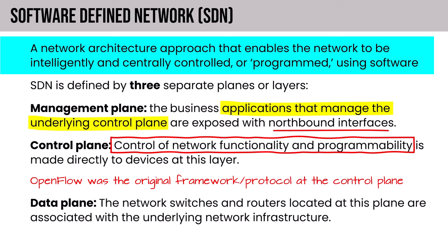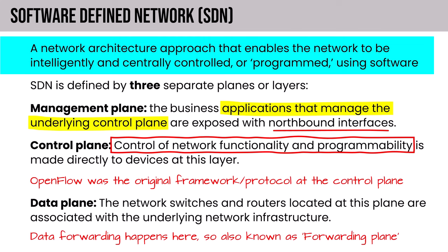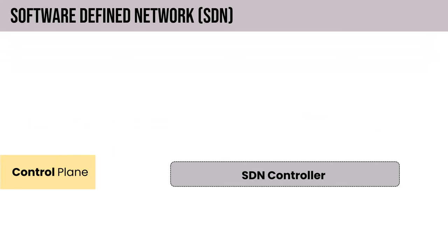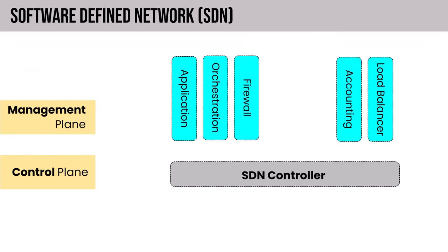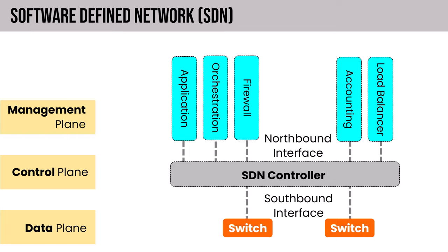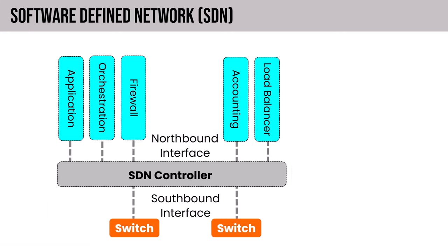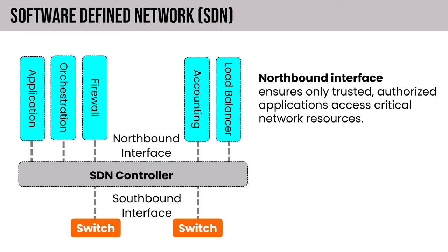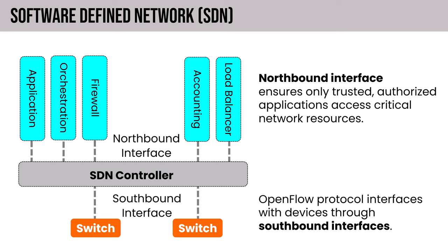The SDN management plane contains business applications that manage the underlying control plane and are exposed with northbound interfaces. The control plane is where control of network functionality and programmability is made directly to the devices through the southbound interface — OpenFlow was the original protocol at the control plane and is still common today. The data plane is where network switches and routers are associated with the underlying network infrastructure; data forwarding happens here, so it's also referred to as the forwarding plane.